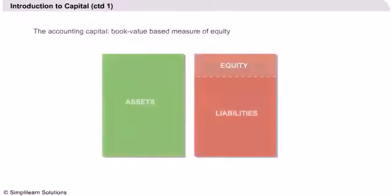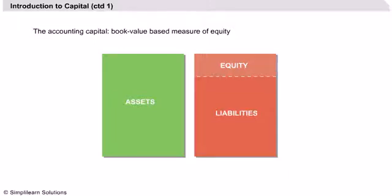Slide 4 provides a graphic illustration of a company's balance sheet with the classic equality: assets equals equity plus liabilities. This is the accounting view of capital, as it does not give any clue about how risky the company's activity is, how liquid the assets are, or how soon the liabilities are due.